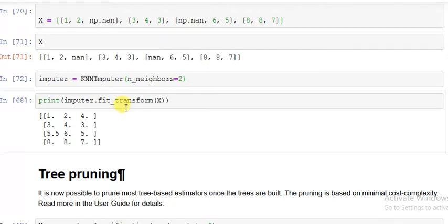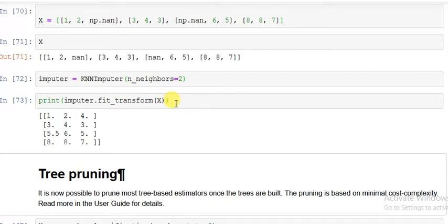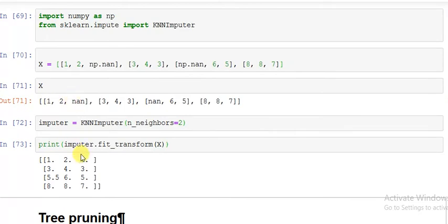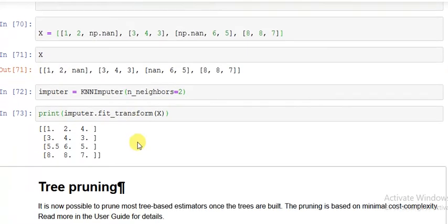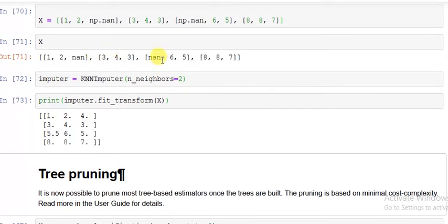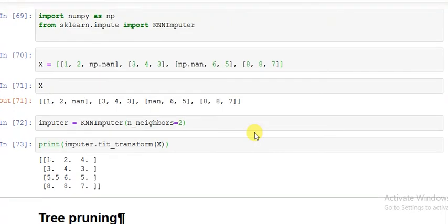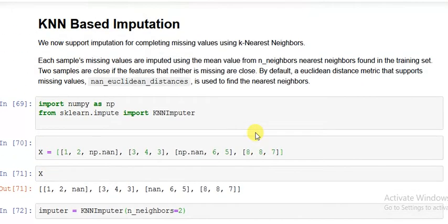See the results: in the first row there was NaN, and it filled it with 4. In the third row where there was NaN, it filled it with 5.5. This is how it sees the pattern and fills NaN values. That's how KNN imputation works.